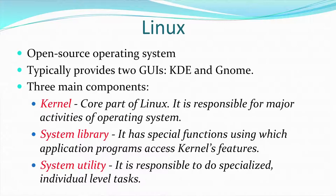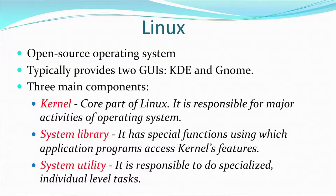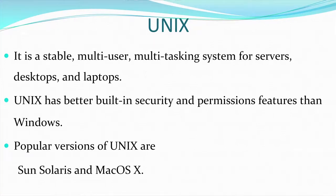Linux has three main components: kernel, system library, and system utility. The kernel is the core part of Linux — it contains the commands and functioning that help in major activities of the operating system; it can be called the brain of the OS. The system library has special functions through which the key features of the kernel can be accessed. The system utility component is responsible for performing specialized tasks that are to be performed by the operating system.